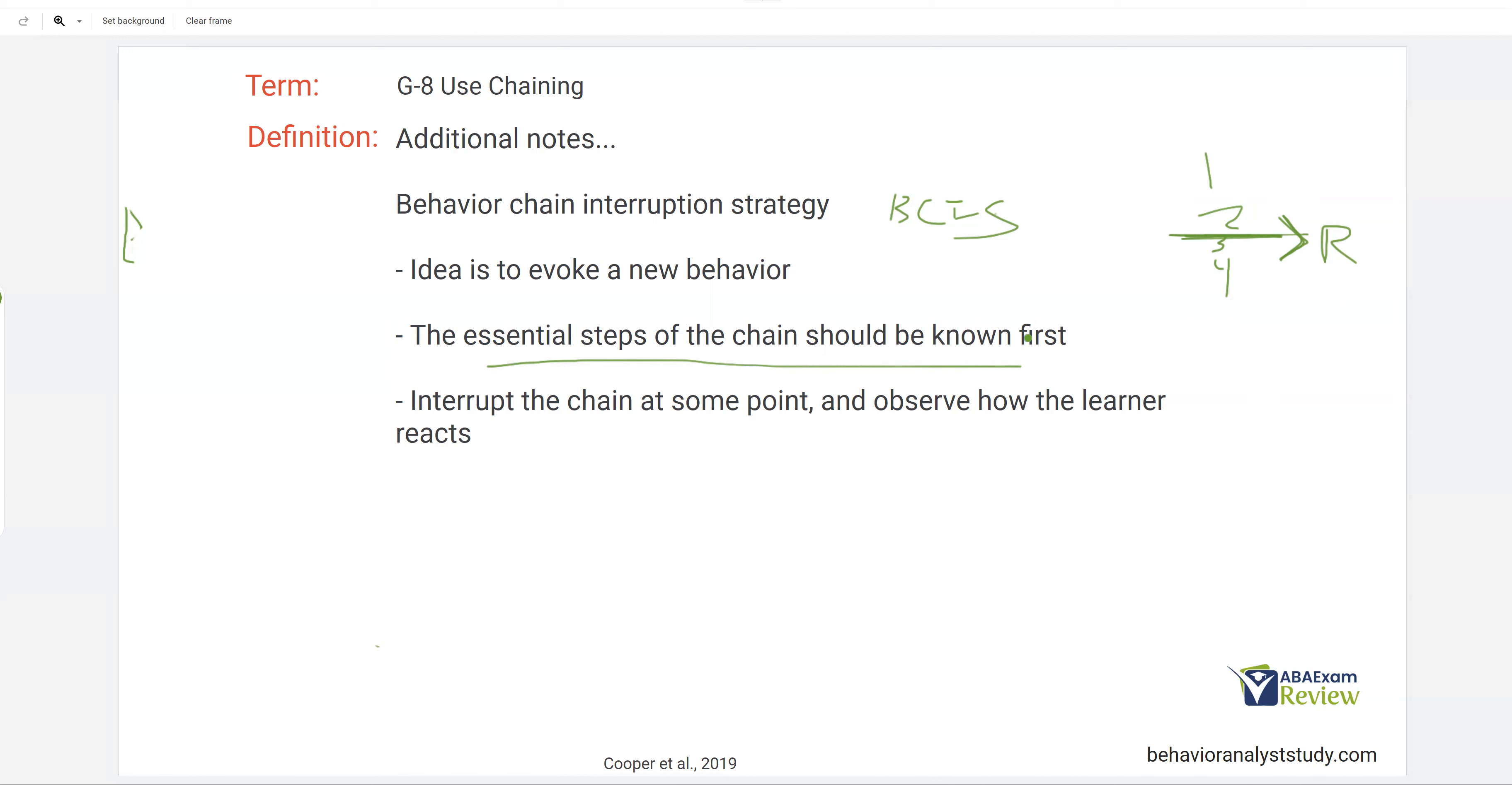Because in the natural environment, in the real world, behavior chains aren't perfect, right? Things happen. The environment changes. And so once we've taught the full chain, we want to start using interruption to start evoking new behaviors. So in case we're not there or the learner is engaged in this chain and in a different location, they won't be caught off guard by sudden changes or disruptions in the chain. Again, very important to remember for the behavior chain interruption strategy that you want the essential steps of the chain to be known first.